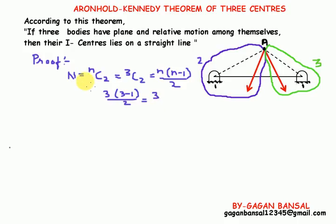So total number of i-centers are 3: i-12, i-13, and i-23. The locations of i-centers in this particular case are: the meeting point of link one and two is i-12, between link one and three is i-13, and the i-center of links two and three is i-23 at point A.